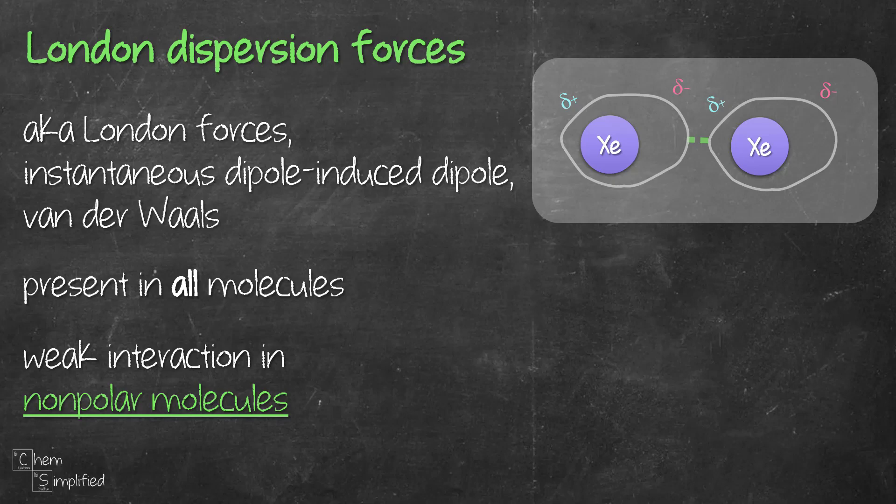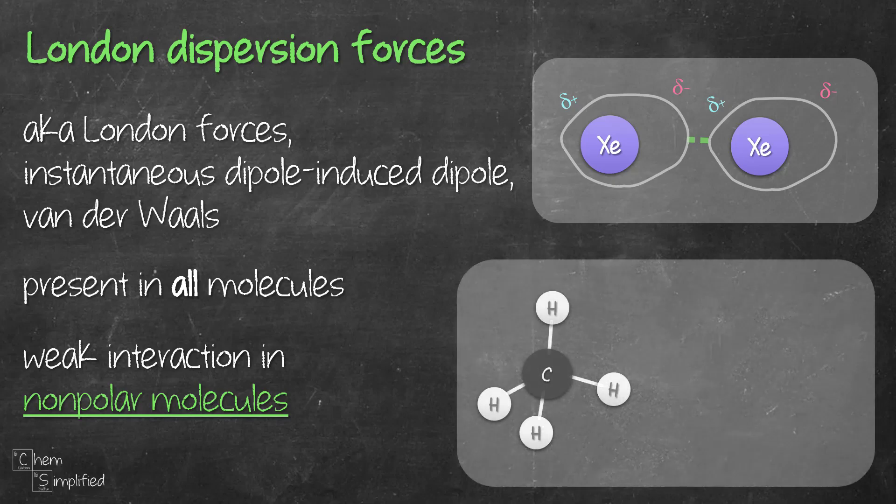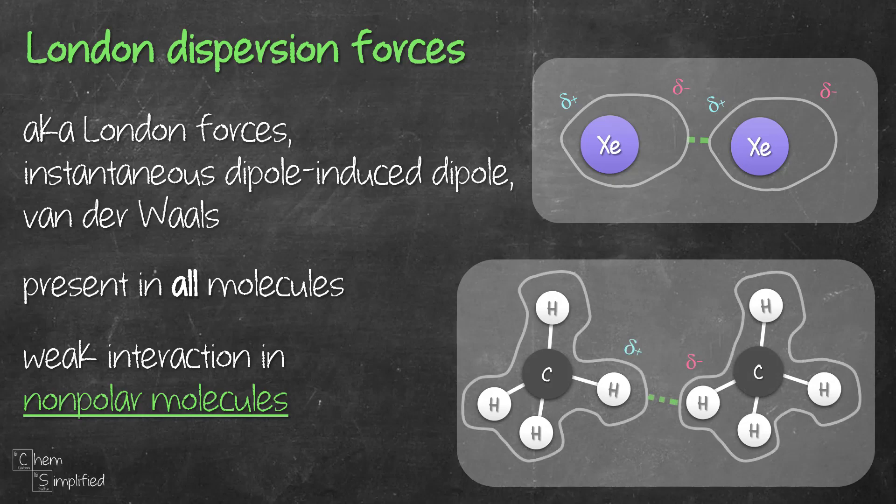This is also true for non-polar molecules like methane. Overall, the molecule is non-polar. However, at some point in time, there's gonna be a shift in the distribution of the electron causing a temporary dipole. The key point to note is that the dipole is only temporary. It will revert back to before. It's like, now you see, now you don't.